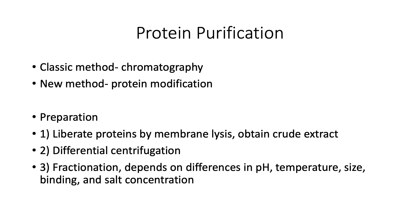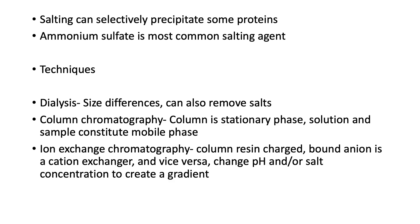This yields what's termed the crude extract, which is basically the non-particulate component of the organism. This is then subjected to differential speeds of centrifugation. At certain speeds you can obtain the protein of interest, depending on whether you're looking at the precipitate or the supernatant. Fractionation then takes whatever component is derived from the differential centrifugation, relying on differences among proteins in pH, temperature, size, binding of constituents, and salt concentration. This is where chromatography comes in.